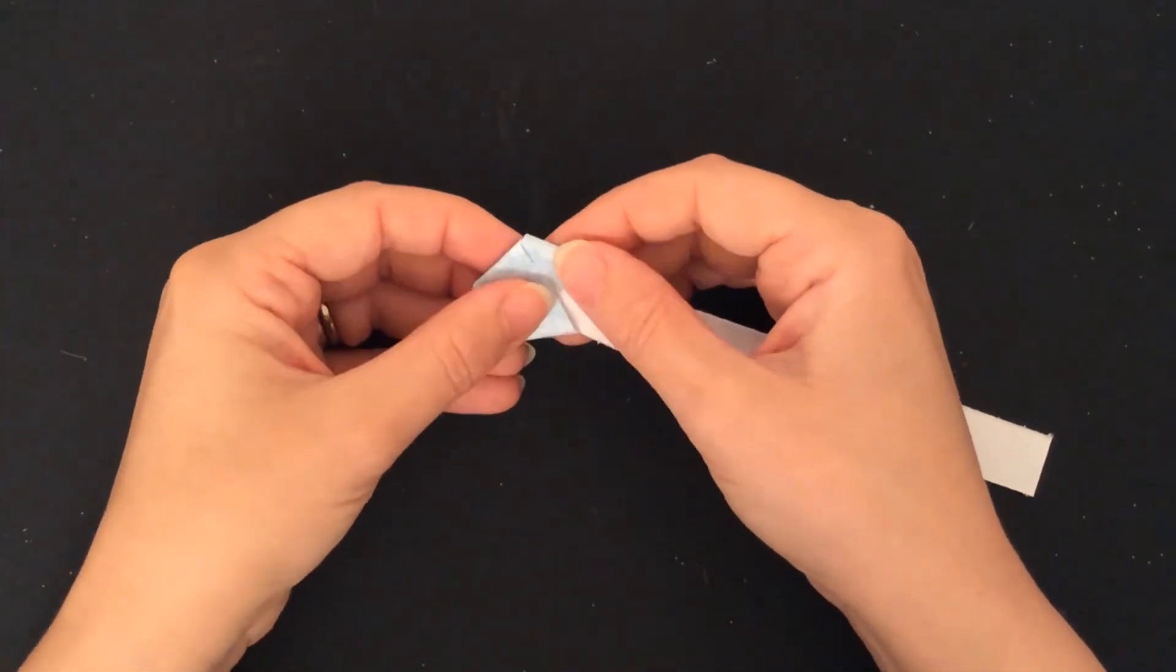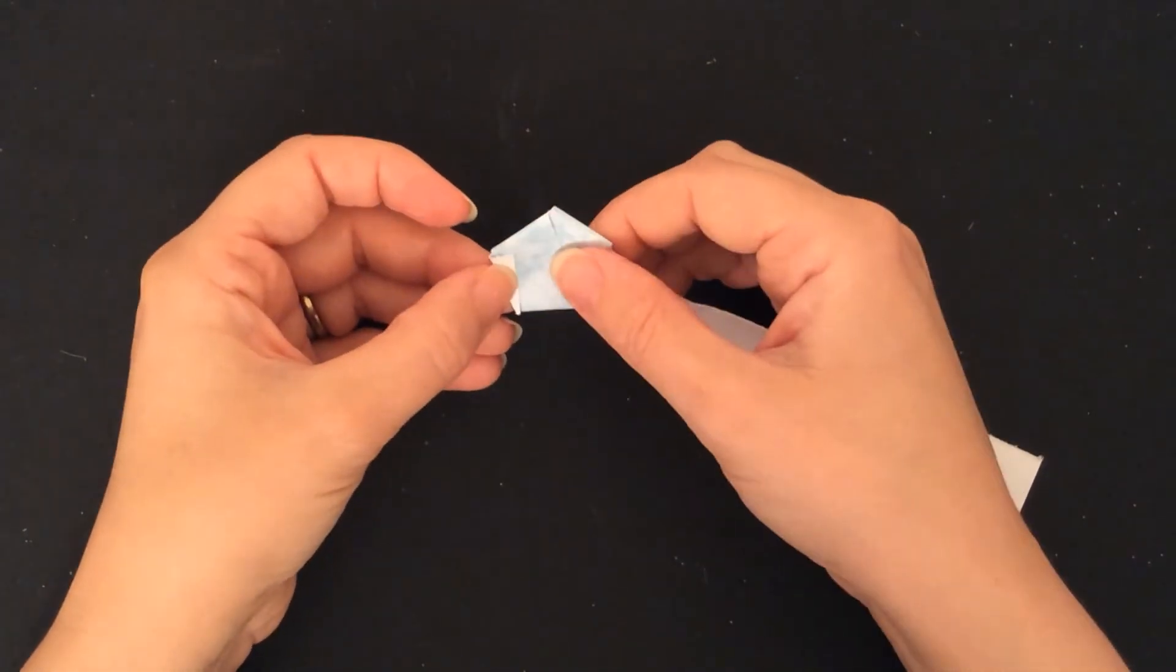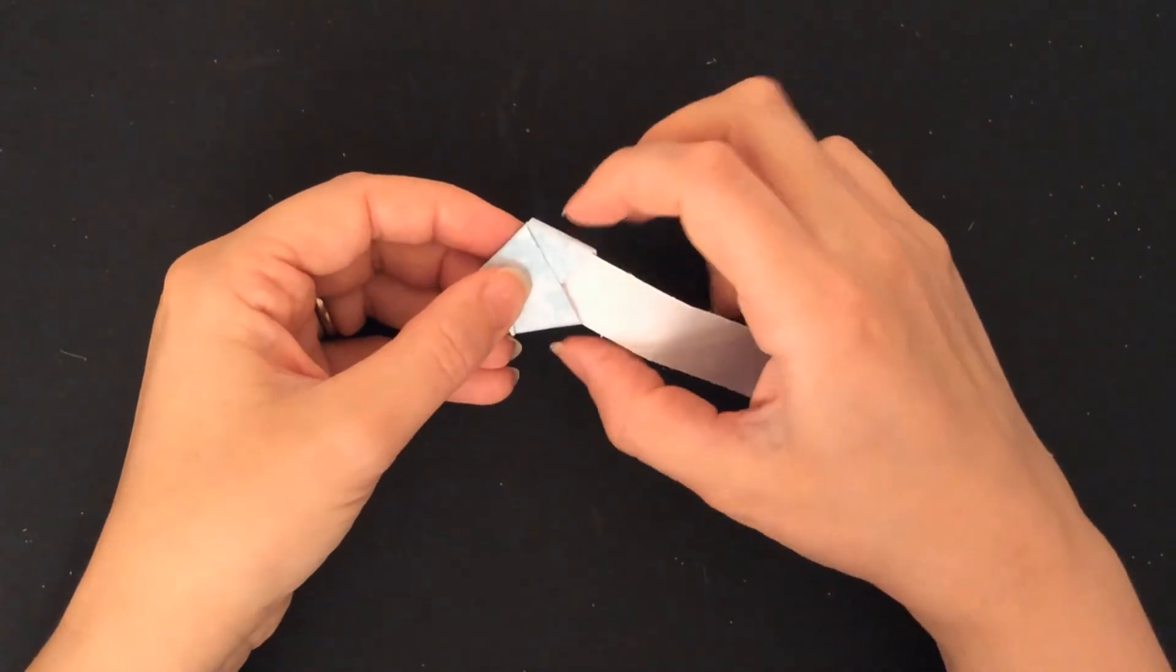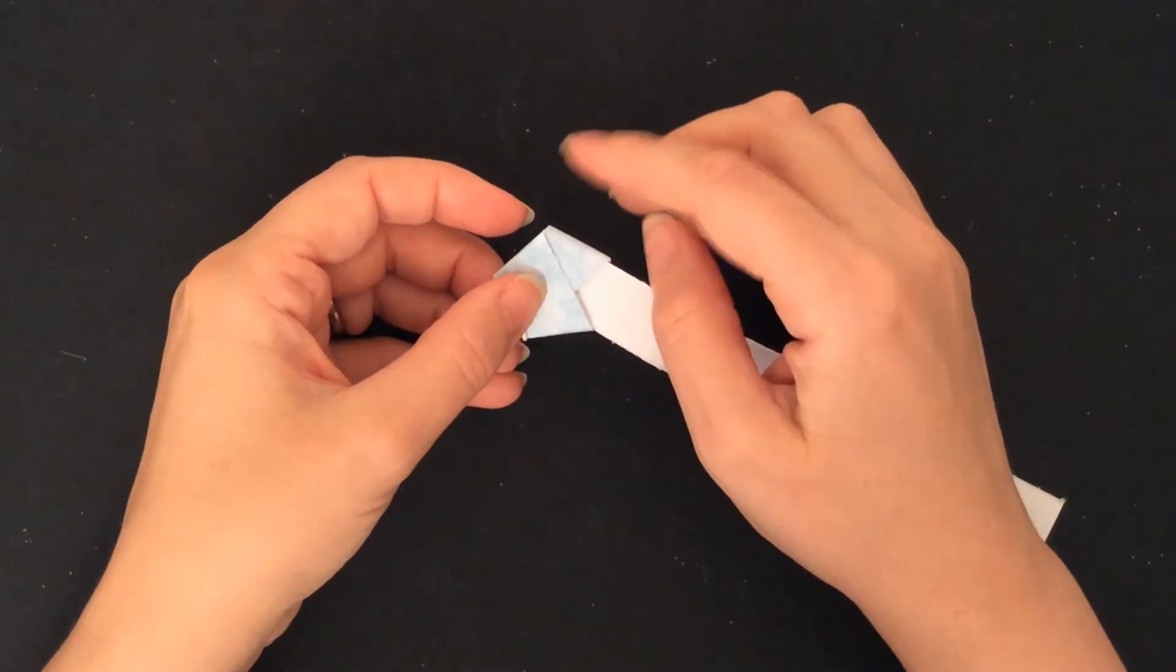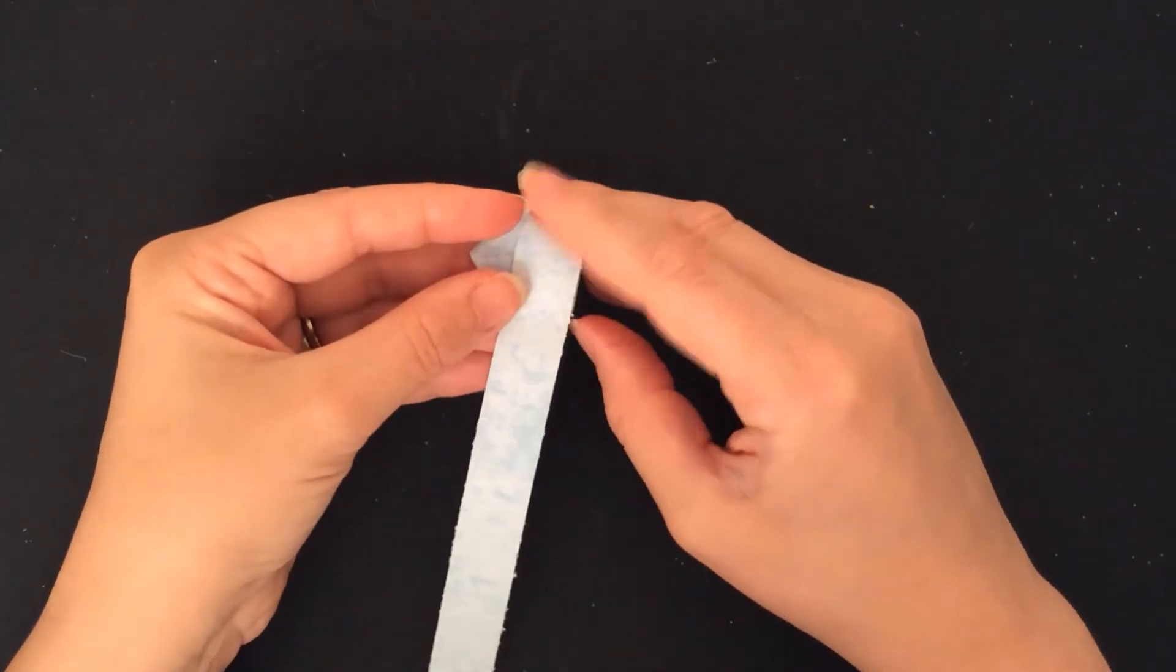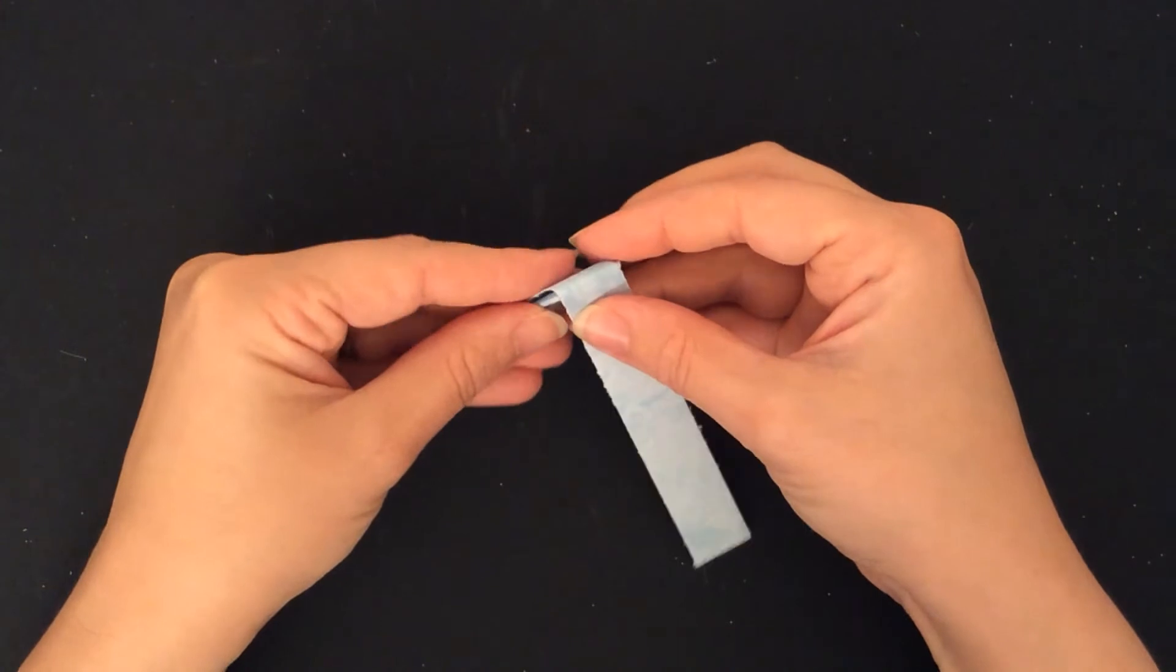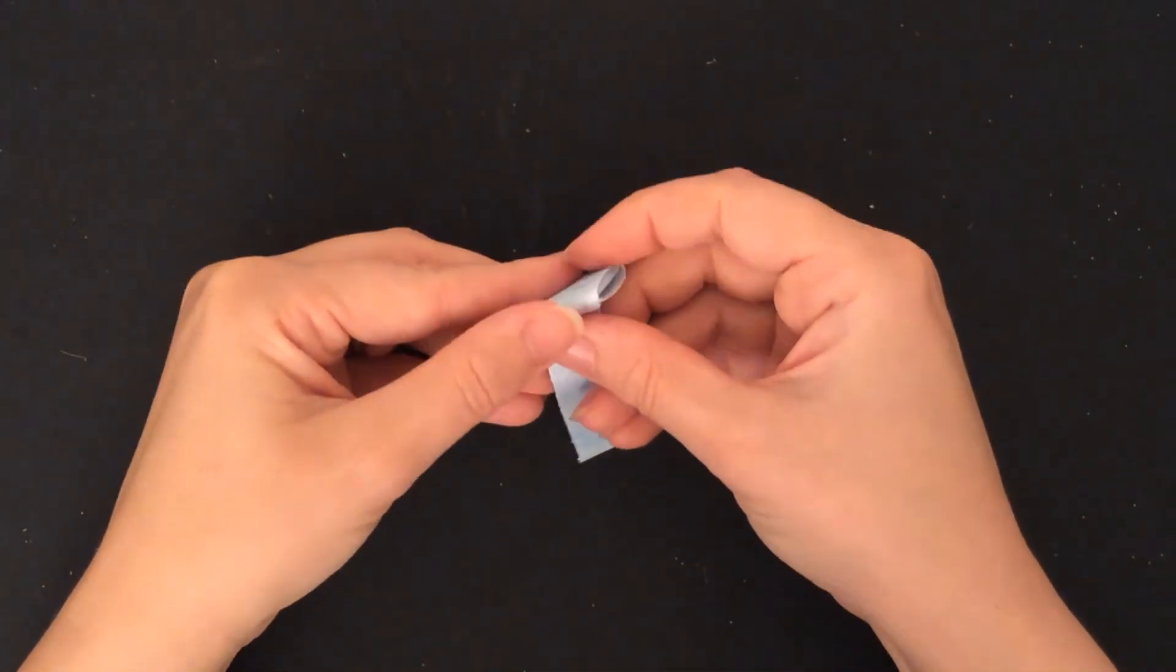What you're going to do now is just slightly press down. You don't want to crease the edges of this one as you will need it to be puffy later and that'll make it difficult if it's creased.